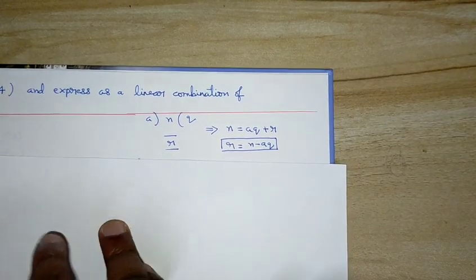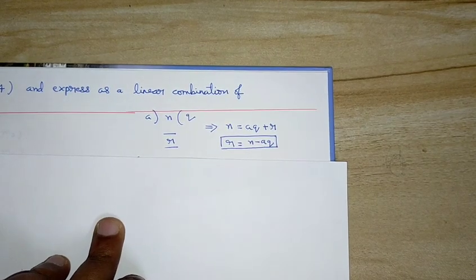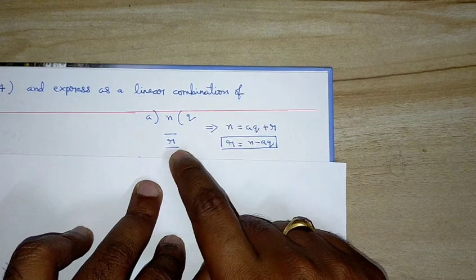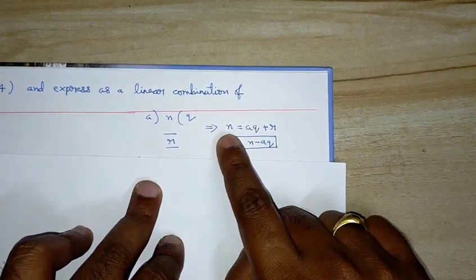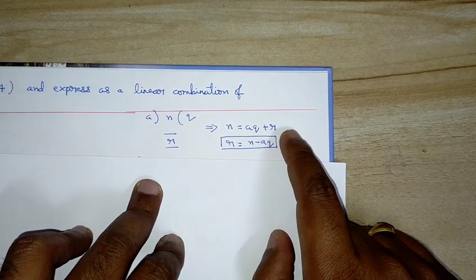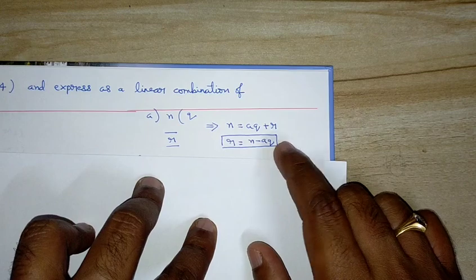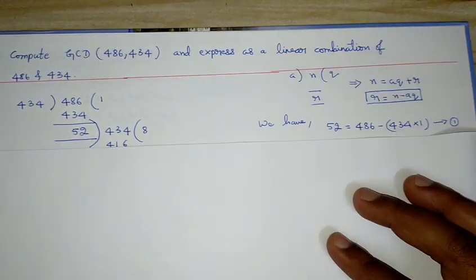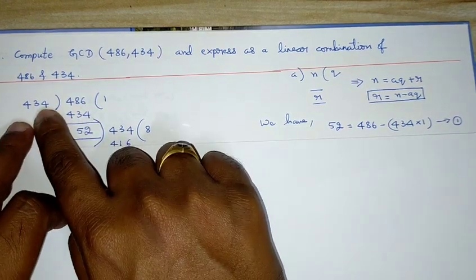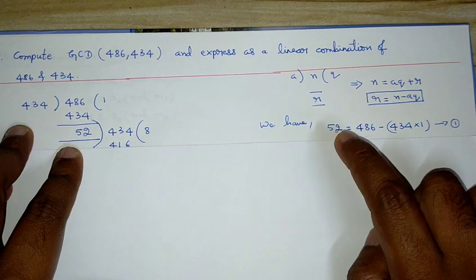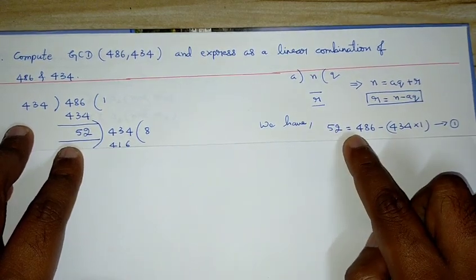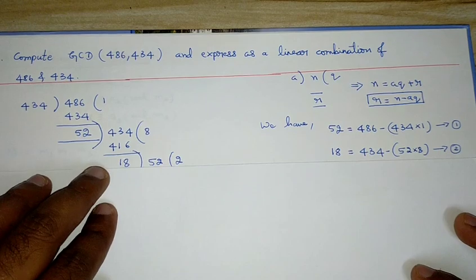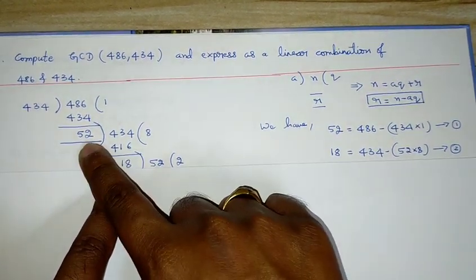To express the gcd as a linear combination of 486 and 434, we use the relation: remainder = dividend − divisor × quotient. From the first division: 52 = 486 − 434 × 1 ... (Equation 1). From the second division: 18 = 434 − 52 × 8 ... (Equation 2). From the third division: 16 = 52 − 18 × 2 ... (Equation 3).